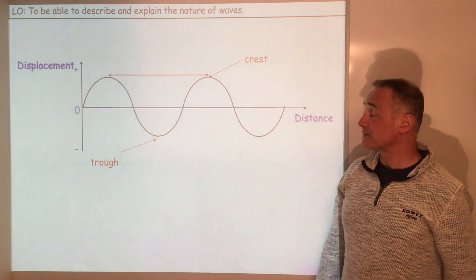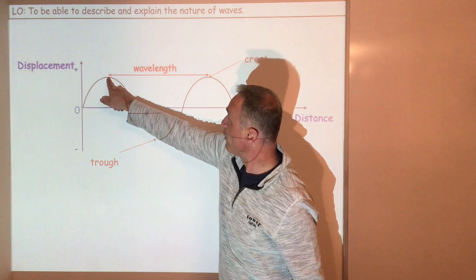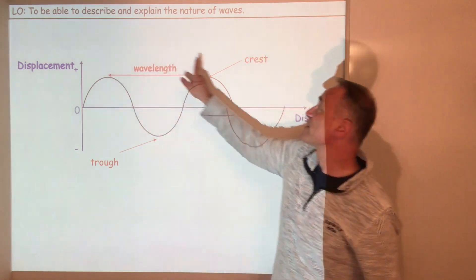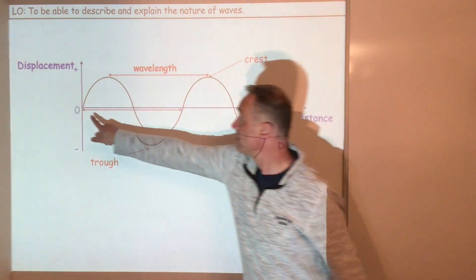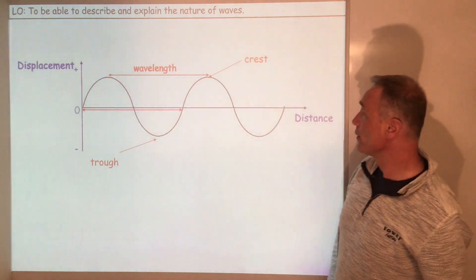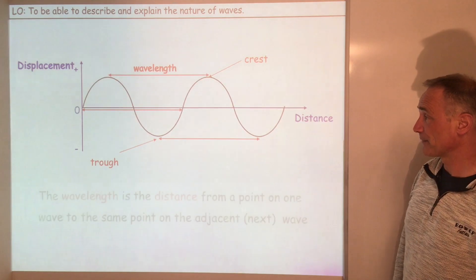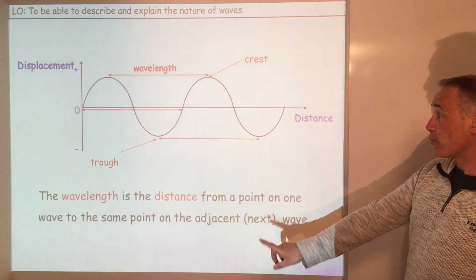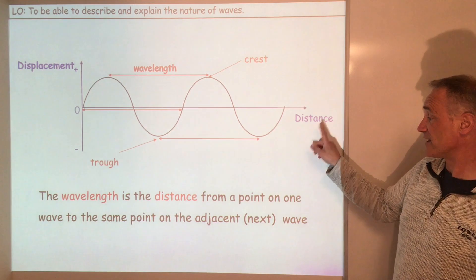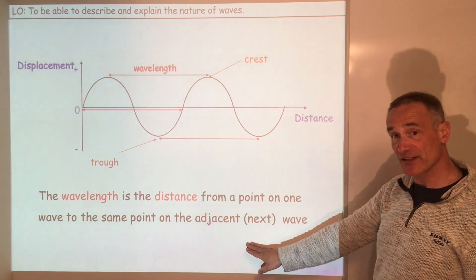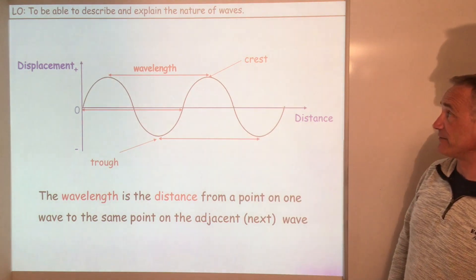So what about wavelength? Well, wavelength is a distance from the point on one wave to the same point on the next wave. So it could be from that point to that point, or from that point to that point. The wavelength is the distance from a point on one wave to the same point on the adjacent — meaning next to — the next wave.